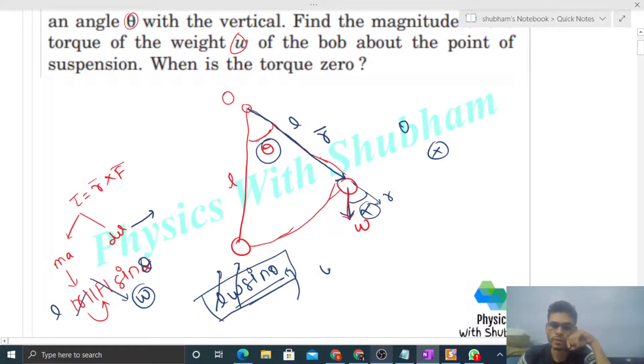L cannot be zero, w cannot be zero, sine theta can be zero when theta is equal to zero. Theta will be zero when this pendulum is in the vertically downward position. At that time, the torque will become zero. The magnitude of torque will become zero. By the way, the line of action of force will pass through the point of suspension.